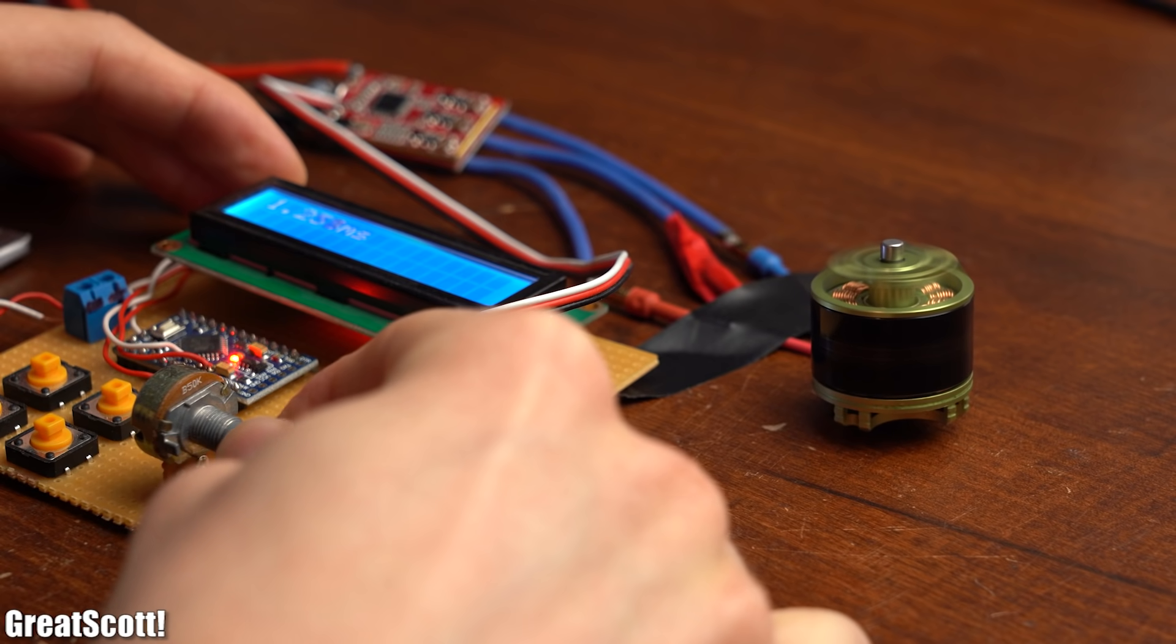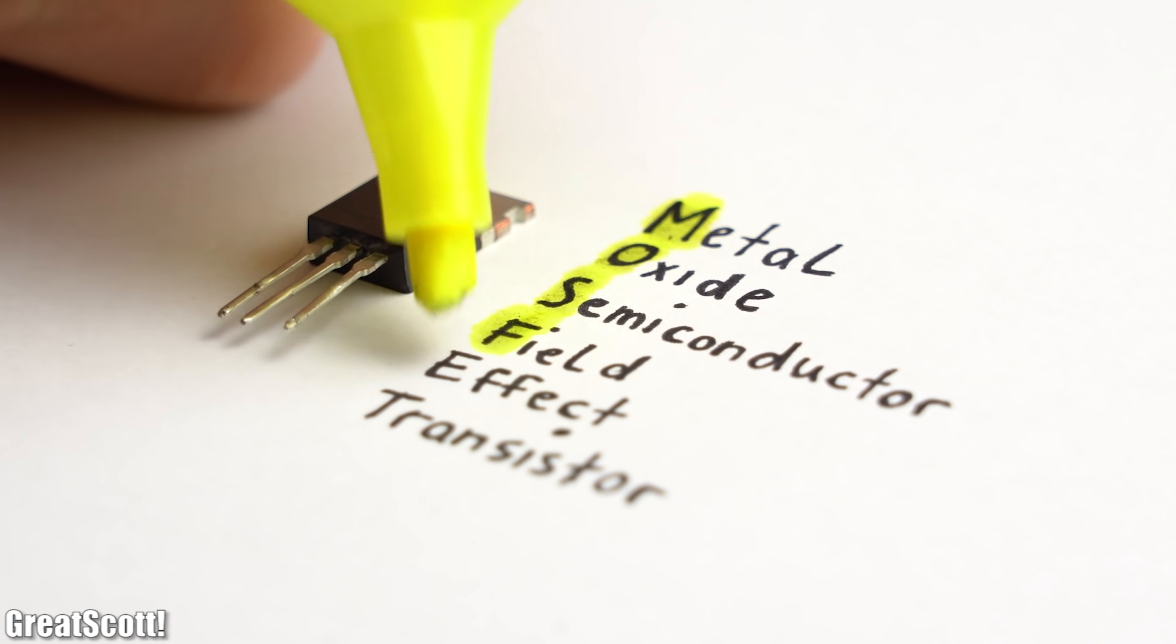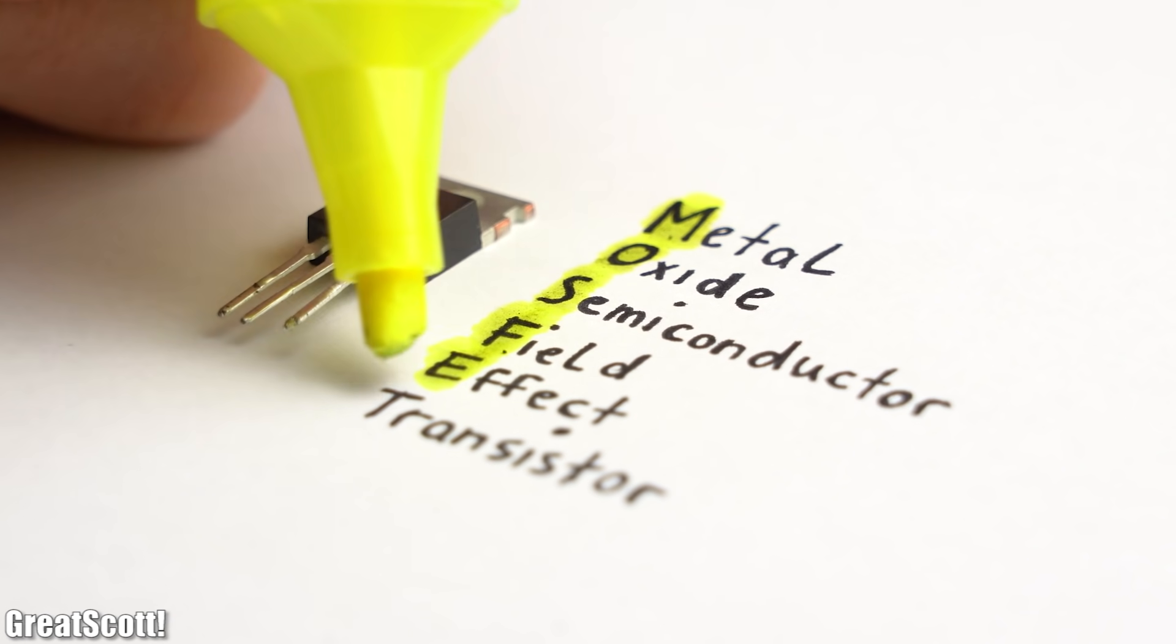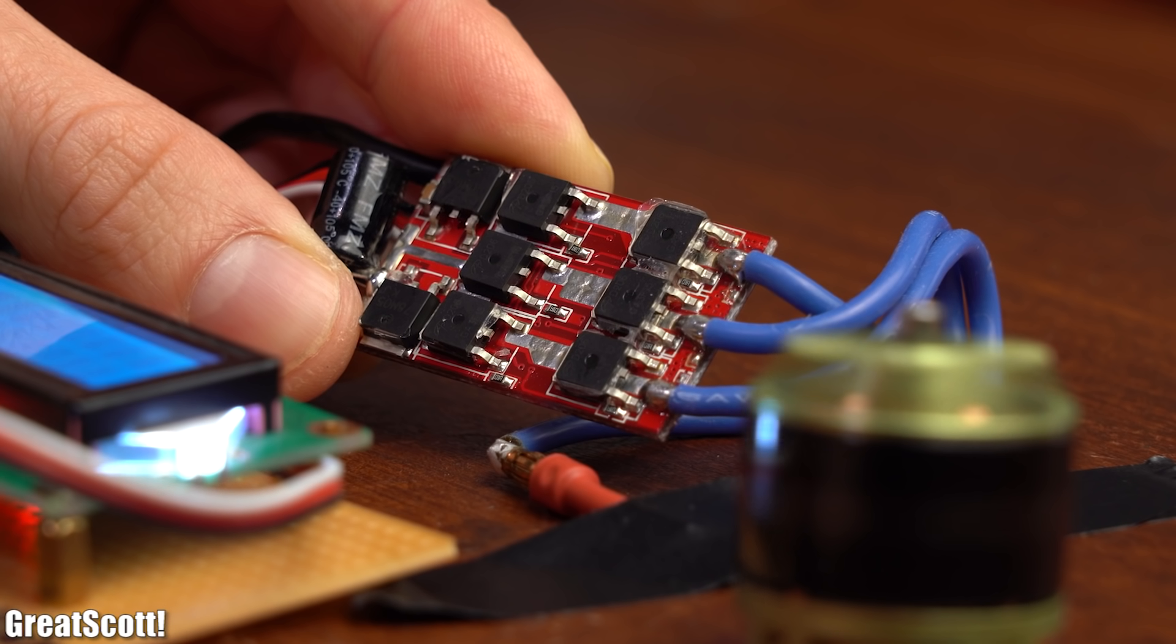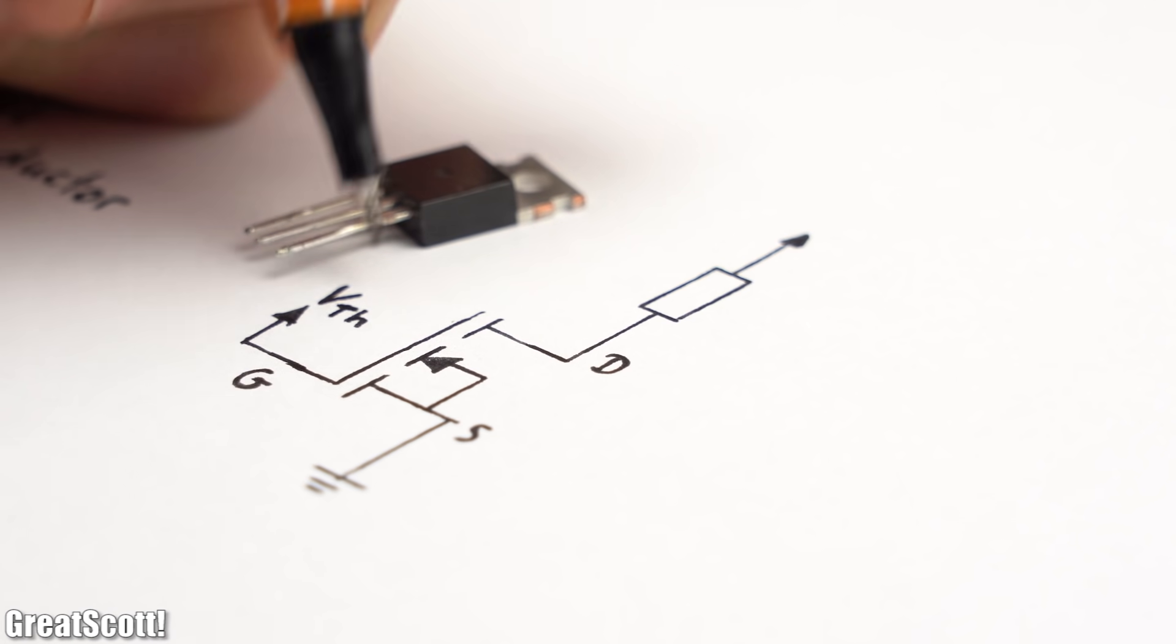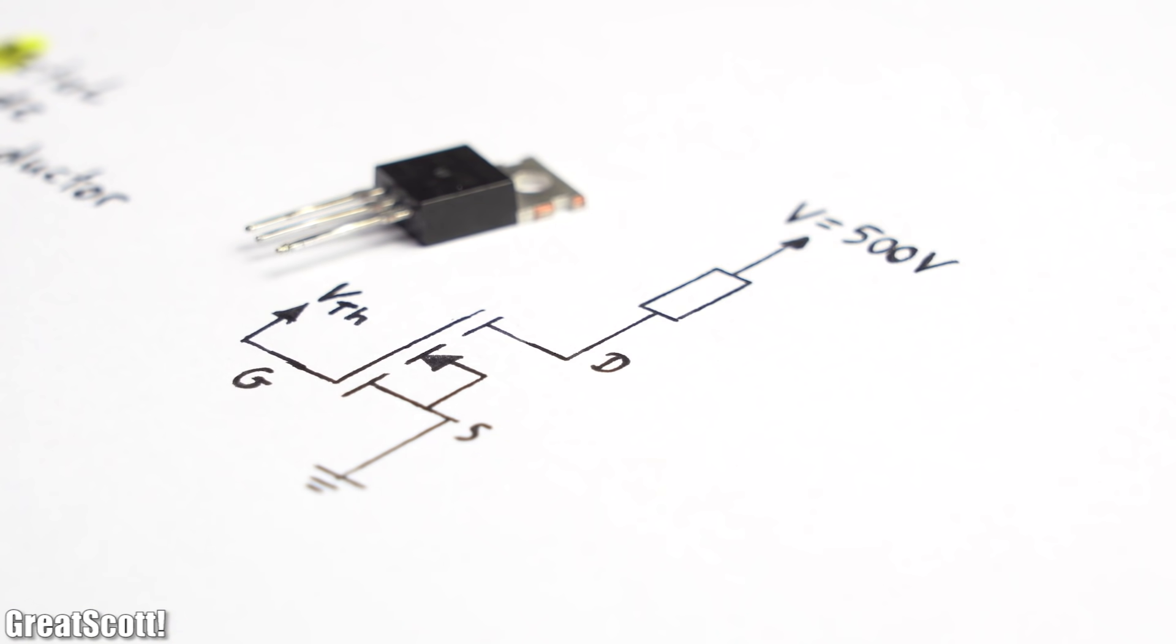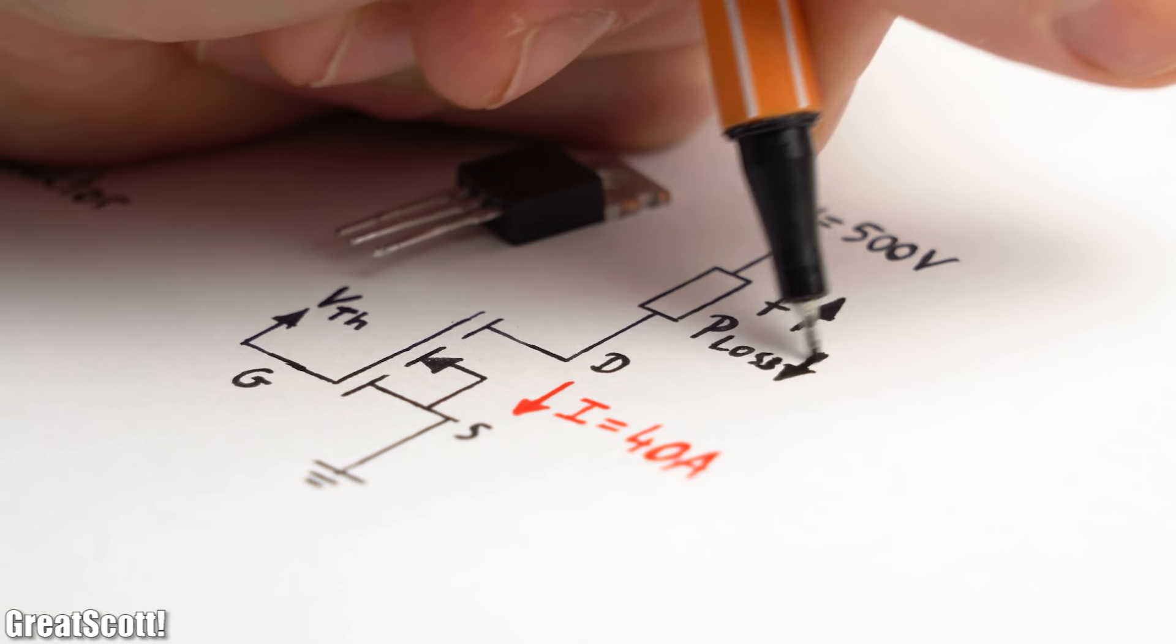Nowadays, the field of power electronics is ruled by so-called MOSFETs, also known as metal oxide semiconductor field effect transistors. The reasons are easy to understand. They only require a certain threshold voltage at their gate in order to switch high voltages and currents with high frequencies and low power losses.